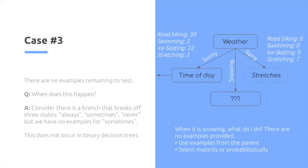The third case is when there's no examples remaining to test at all. So this happens when sometimes a branch breaks off. Let's say in this case, I look at the weather, there's sunny, snowing, or rainy. I don't have any examples for snowing, just one possible case. So in that case, when I look at snowing and there's no possible example.